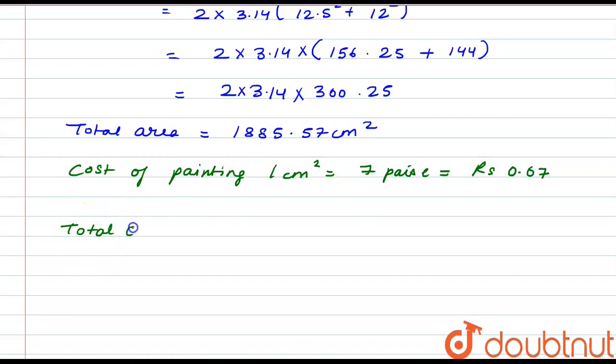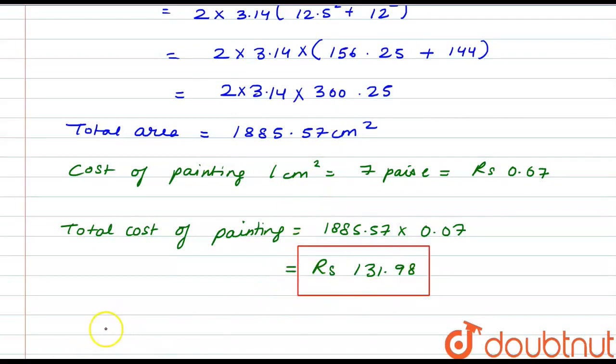The total cost of painting would be 1885.57 into 0.07. This comes out as rupees 131.98. So the total cost of painting the vessel comes out to be rupees 131.98. Thank you.